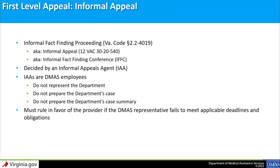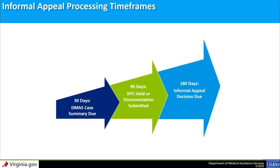Examples of instances where the IAA must rule in favor of the provider are if a case summary is not submitted or is submitted untimely — meaning after the 30-day deadline — or if the department does not appear at an IFFC. This is the basic timeline of an informal provider appeal: 30 days after the appeal is filed, the DMAS case summary is due; 90 days after the appeal is filed, the IFFC must be held or all appeal documentation must be submitted; 180 days after the appeal is filed, the informal appeal decision is due.